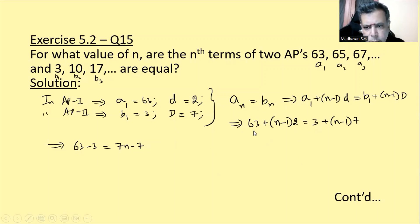Yaha pe right hand side me 7n minus 7. Left side pe 2n ho ta hai, us side lye jane se minus 2n ho jaata hai. Yaha minus 2 hai, us side lye jane se plus 2 ho jaata hai. Tho yaha nikalta hai.